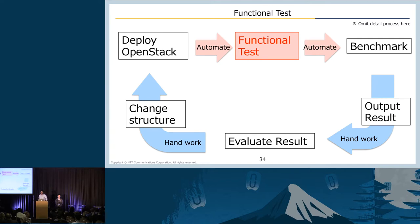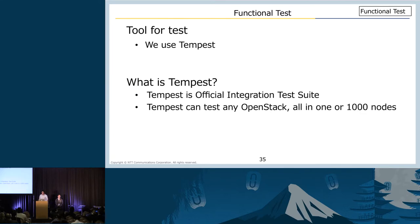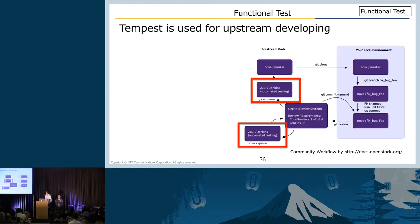I'd like to talk about functional tests in this cycle. We use Tempest for testing our OpenStack. Tempest is the official integration test suite — it can test any OpenStack, for example all-in-one OpenStack or multi-node OpenStack. It is used for upstream development: when you upload a patch to the community, Jenkins tests your patch with Tempest, and if your patch doesn't pass the test, it will not be reviewed or merged.